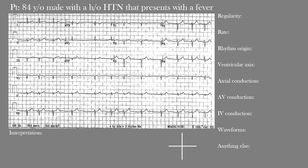One of the main things we do is use the R waves, or whatever the prominent wave is in the QRS complex, to look at regularity. Regularity means: is the distance between these R-to-R intervals the same throughout? You can see it's clearly different from one interval to the next — constantly changing throughout the EKG. Using calipers or paper to measure confirms it's always changing. So we call this an irregularly irregular rhythm — no regularity whatsoever.